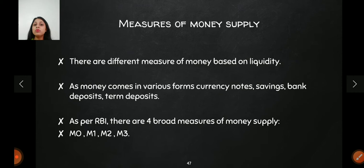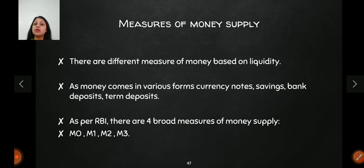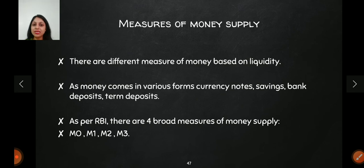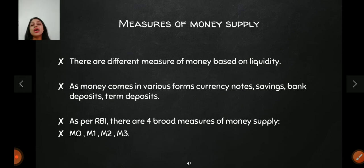Now come the measures of money supply — on what basis do we decide how much stock of money is in the economy? These measurements are based on liquidity. The first measure includes only the most highly liquid money that can be easily transferred. As we move from M1 to M2 to M3, liquidity comparatively decreases. All are still liquid assets, but based on liquidity we have different measures. RBI has four broad measures: M0, M1, M2, and M3.